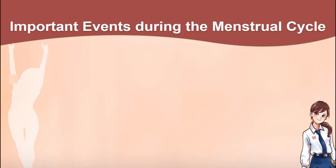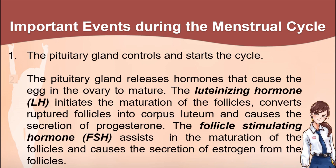Now let us summarize the important events during the menstrual cycle. 1. The pituitary gland controls and starts the cycle. 2. The pituitary gland releases hormones that cause the egg in the ovary to mature. The luteinizing hormone (LH) initiates the maturation of the follicles, converts ruptured follicles into corpus luteum, and causes the secretion of progesterone. The follicle-stimulating hormone (FSH) assists in the maturation of the follicles and causes the secretion of estrogen from the follicles.